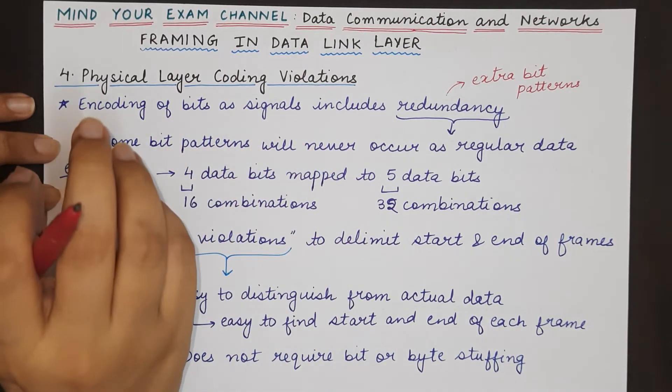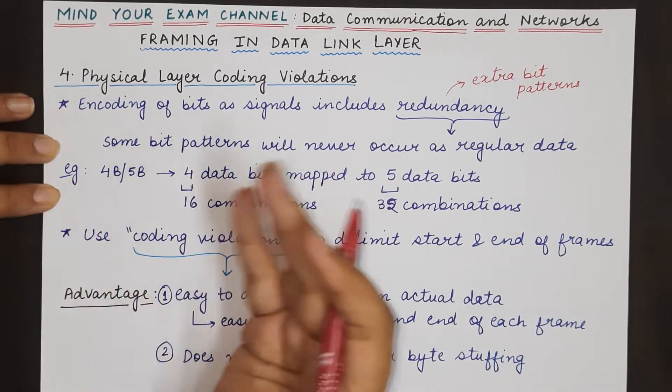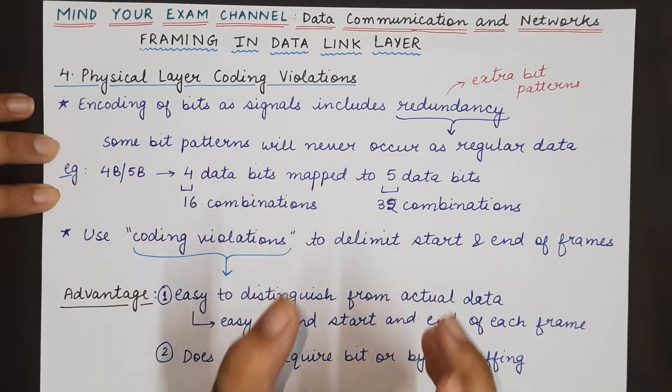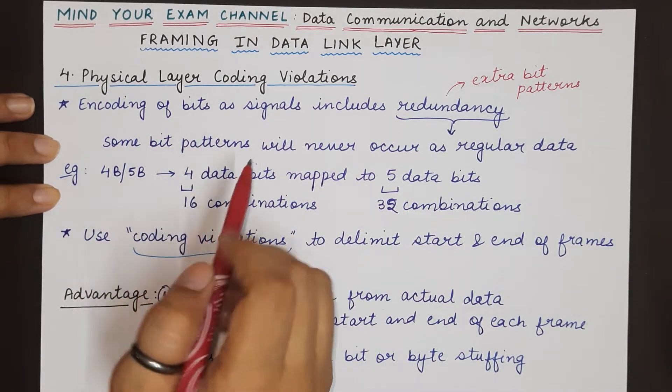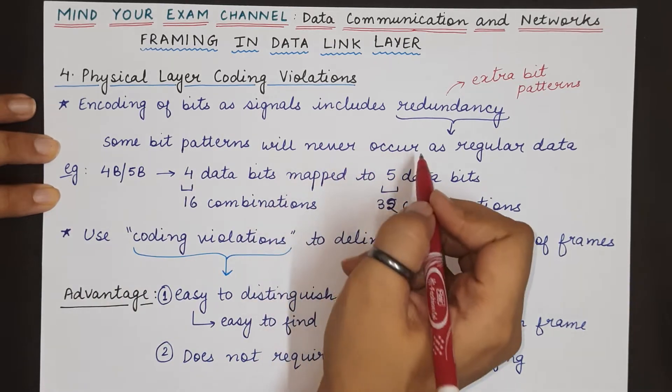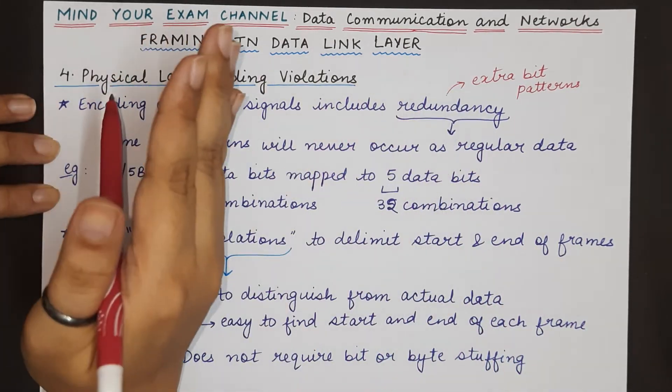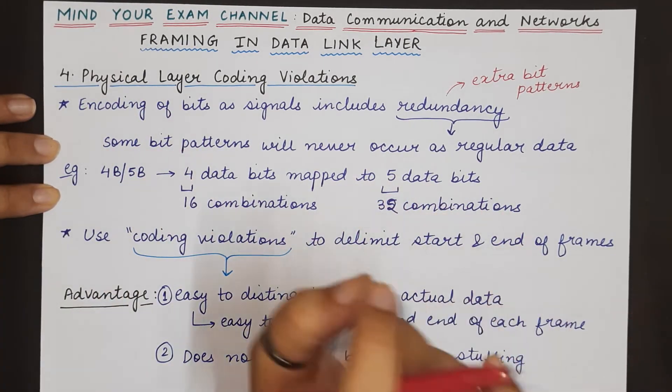This is how redundancy happens when we are at the physical layer performing encoding of bits and representing a 4-bit pattern by a 5-bit pattern, so that some redundancy is introduced and those redundancy can be used for other tasks. One of these tasks is framing. Actually, some bit patterns that never occur as regular data can be used as the delimiters for the starting and ending of the frames at the data link layer.